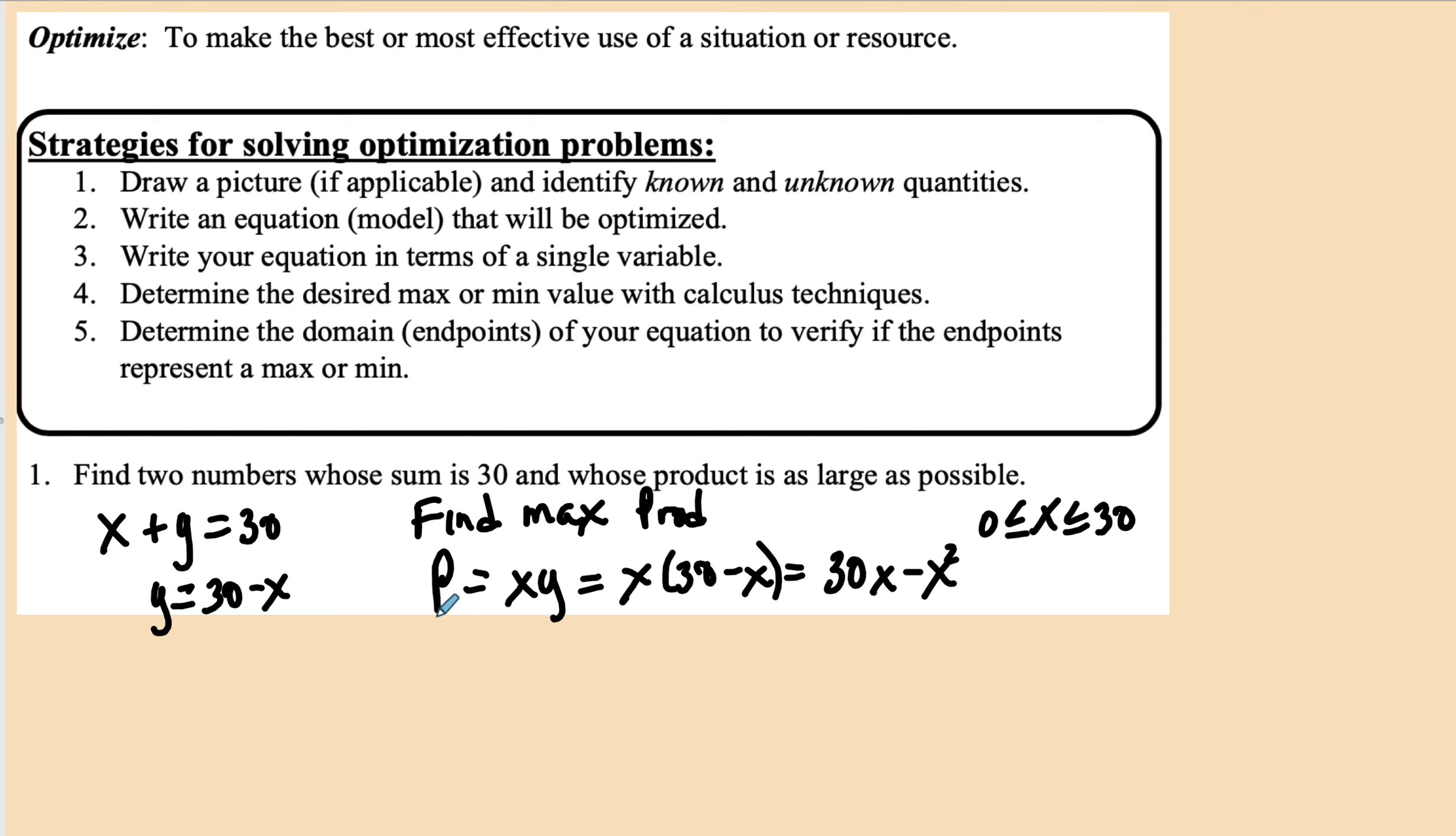All right, now we have our product in terms of x. So we're going to take the derivative and that'll be 30 - 2x. We're going to set the first derivative equal to 0 and that means x will be equal to 15.